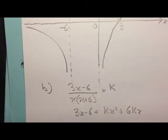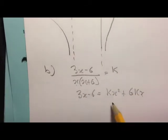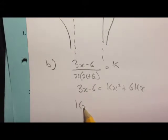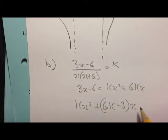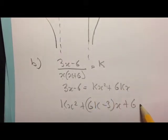So 3x minus 6 equals k lots of x squared plus 6k lots of x. Bring everything to the right hand side: I've got k lots of x squared plus 6k minus 3 lots of x. I put that in brackets because I'm thinking of this as a and b in the form ax squared plus bx plus c equals 0. Bring the minus 6 over to make plus 6 equals 0.